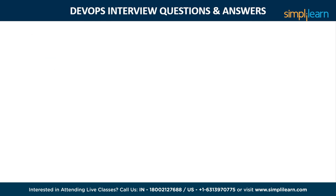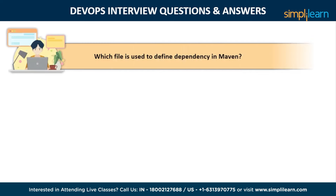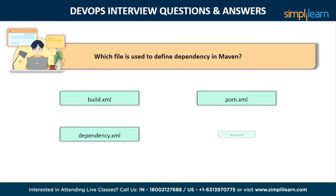The next question is: which file is used to define dependency in Maven? The options are build.xml, pom.xml, dependency.xml, or version.xml. The correct answer is pom.xml.